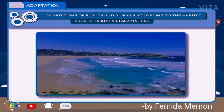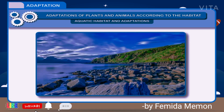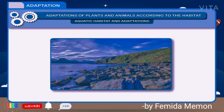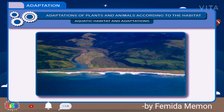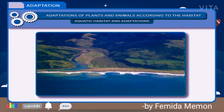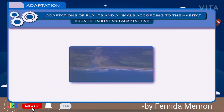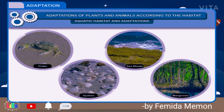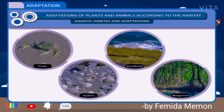Coastal habitat refers to the regions where the sea meets land. There are varieties of coastal habitats suited for different types of organisms. Estuaries are coastal regions where rivers and streams containing fresh water meet the salty water of the sea. These unique habitats are supported by organisms like crabs, oysters, and other sea animals.